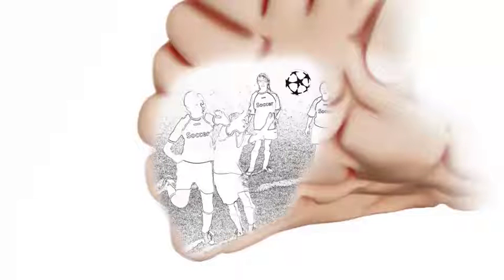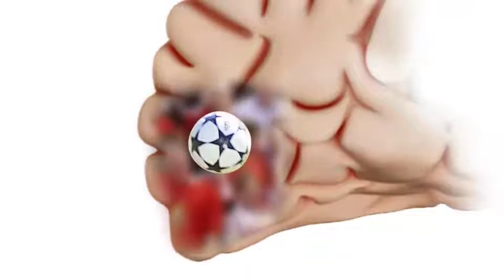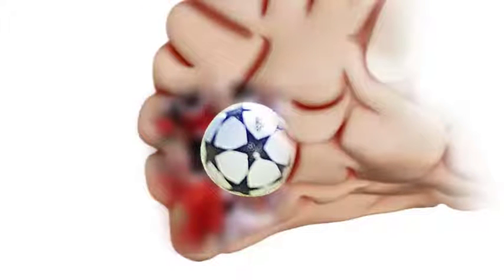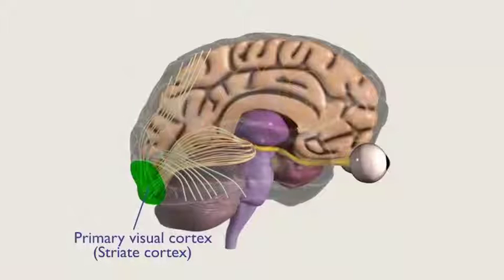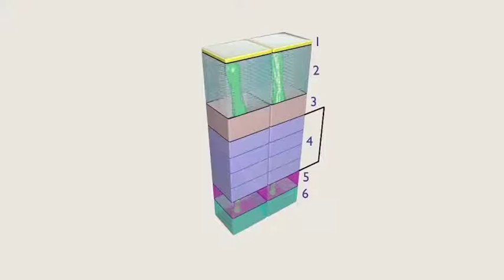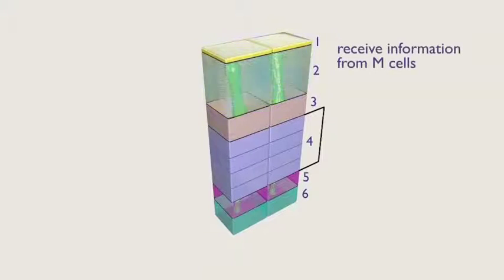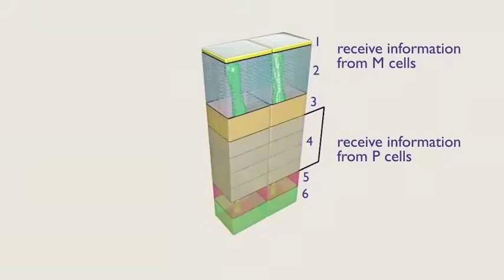For example, edges of stimuli—contrast between the black and white portions of the soccer ball, contrast between the color of the uniforms of Laura's opponents versus her teammates—and the direction of movement of the ball are all features that are analyzed by the primary visual cortex. The cells in the primary visual cortex are arranged in horizontal layers and perpendicular columns. As in the thalamus, information from M cells and P cells are sent to separate layers of the primary visual cortex.